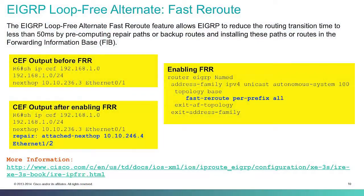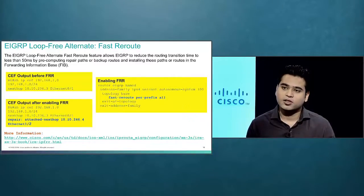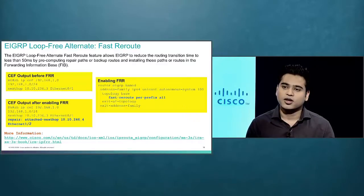EIGRP is one of the fastest protocols available. A good network design is the key to faster convergence, and EIGRP uses the concept of feasible successors to achieve fast convergence. To improve convergence time even further, there is a new feature called fast reroute for loop-free alternates. These loop-free alternates are essentially feasible successors under a new name. What fast reroute does is put that feasible successor information into the CEF table, so in case the best route goes away or there is a link failure, that information can be used directly from the CEF table, providing convergence time of less than 10 milliseconds.